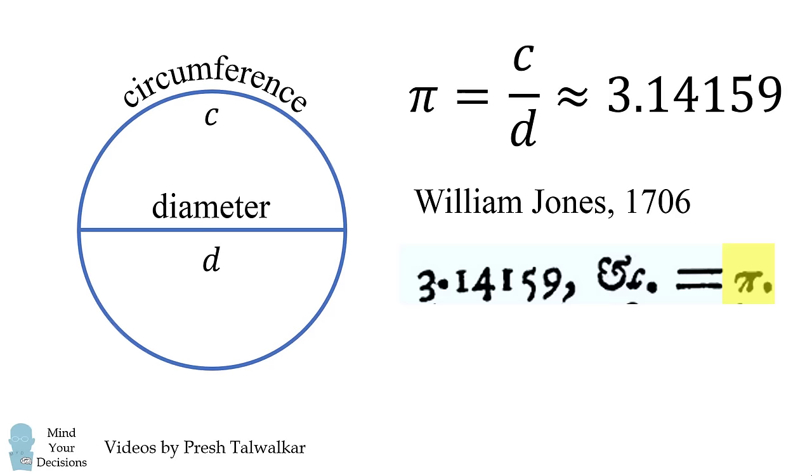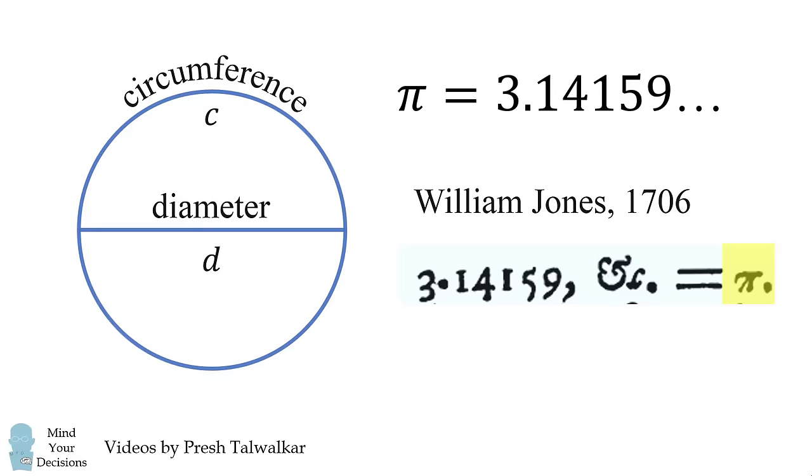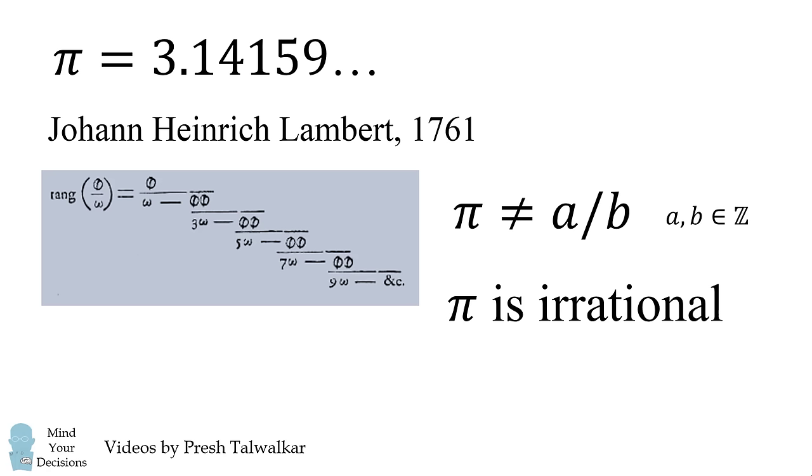Another interesting thing is that while the ancient mathematicians suspected that pi was a never-ending decimal that didn't repeat, they didn't know it for sure. The first rigorous proof came in 1761 from Lambert, who demonstrated once and for all that pi is irrational. It cannot be represented as the ratio of two positive whole numbers.